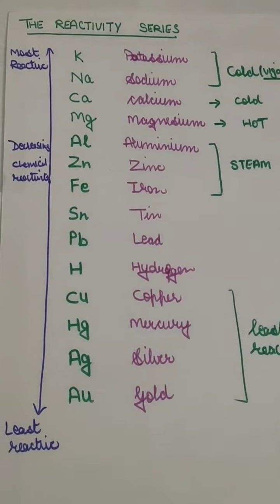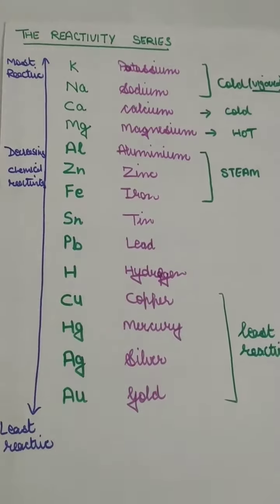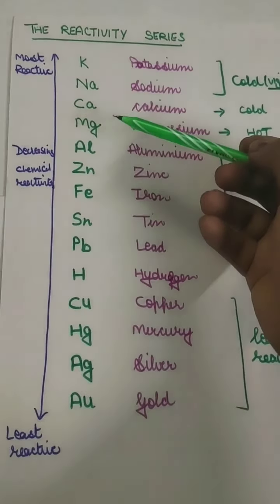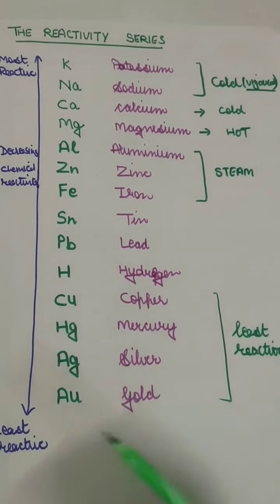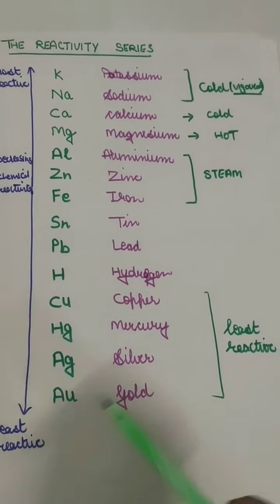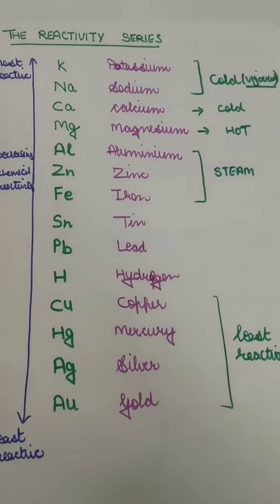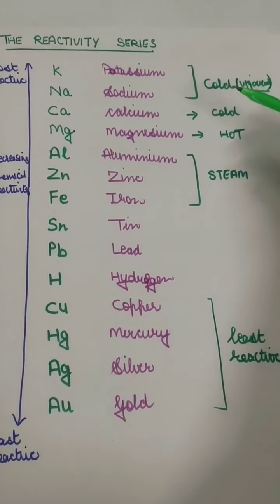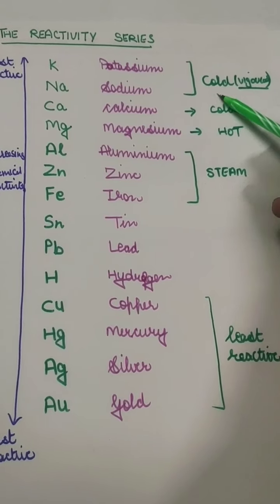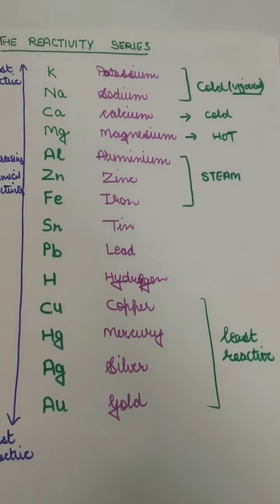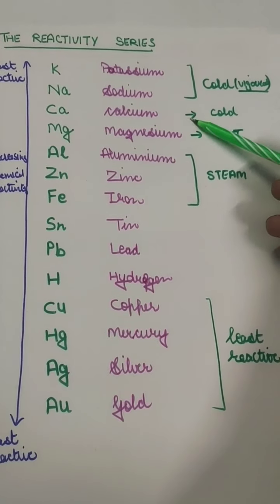You already know the symbols of these elements. K stands for potassium. You have to learn this series thoroughly. The most reactive elements are written on the top and the least reactive are at the bottom. Potassium and sodium react with cold water very vigorously and a lot of heat is produced. But in the case of calcium, heat is not produced.